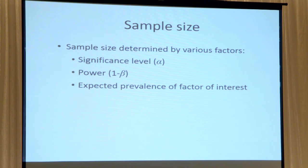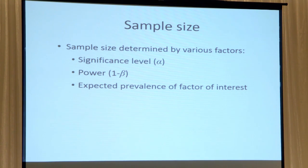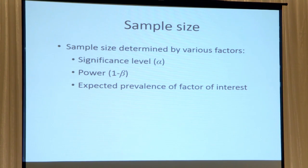How about the expected prevalence of factors of interest? Nick, can you explain whether that relates to a higher or lower number of patients? If the factor of interest is more common, then you need fewer patients in your study. And if it's rarer, then you need more patients.